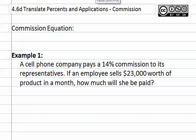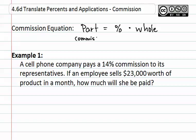4.6 D: Translate Percents and Applications — Commission. Commission is something that you earn when you sell something. The commission equation is just like those before, in which the part equals percent times whole. In this case, the part is the amount of commission and it is equal to the percent times the amount of sales or the price.